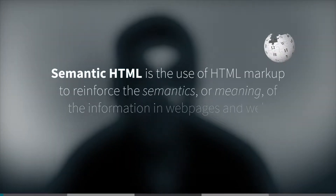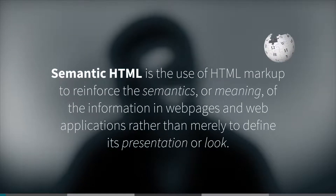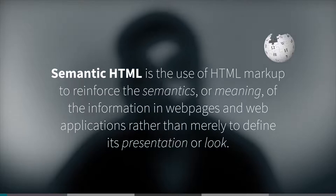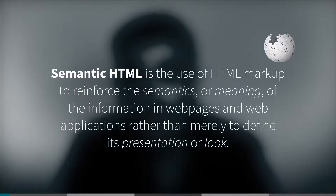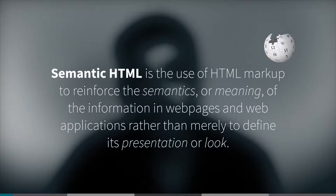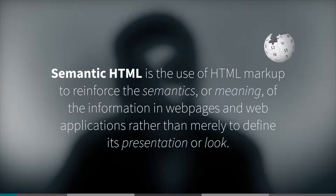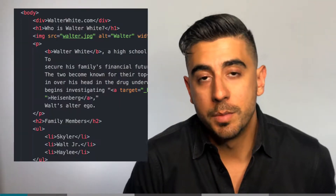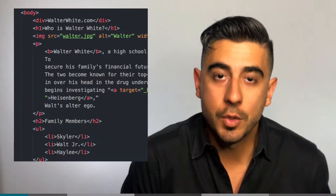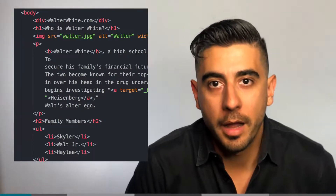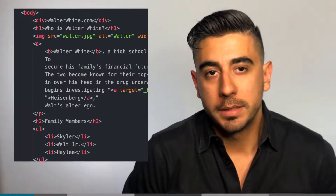According to Wikipedia, semantic HTML is the use of HTML markup to reinforce the semantics or meaning of the information in web pages and web applications, rather than merely to define its presentation or look. In the Walter White example we made together in the last video, we used p tags, h1, h2, ol, li — all that stuff.